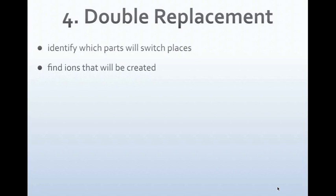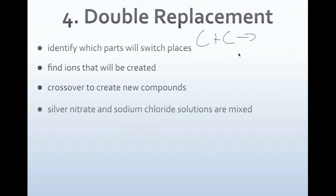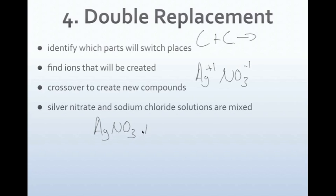In a double replacement reaction, the similar elements — the metals — switch places and make two new compounds. If we have a compound plus a compound in the reactants, it's a double replacement reaction. Here, silver nitrate and sodium chloride solution are mixed. Silver is Ag (plus 1), nitrate is NO3 (negative 1) — we crisscross to get AgNO3. Sodium is Na (plus 1), chlorine is Cl (minus 1) — we crisscross to get NaCl.